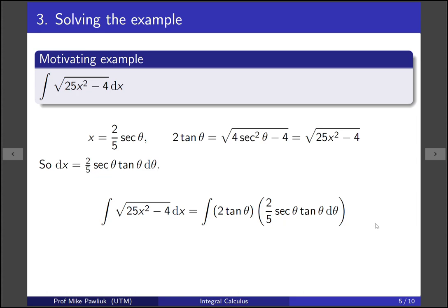Okay, so now we group everything together, and we have 4 fifths integral of secant tan squared. Now this is something we know how to do. It's a product of tans and secants.